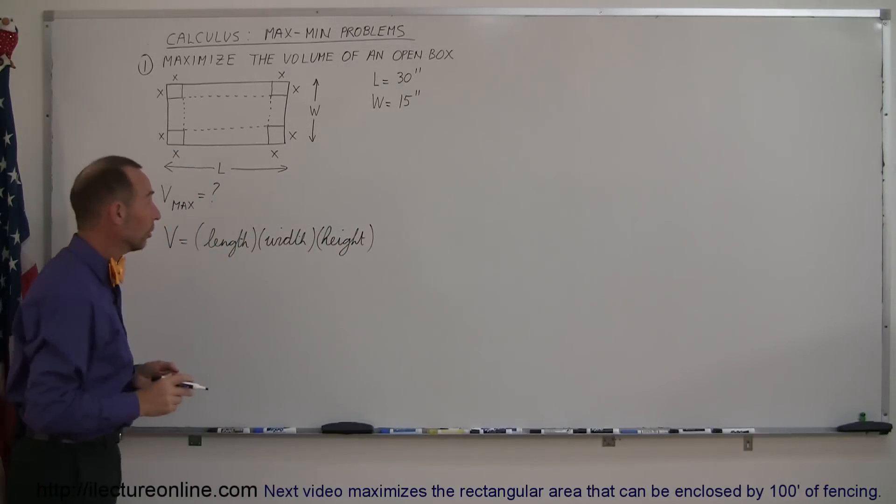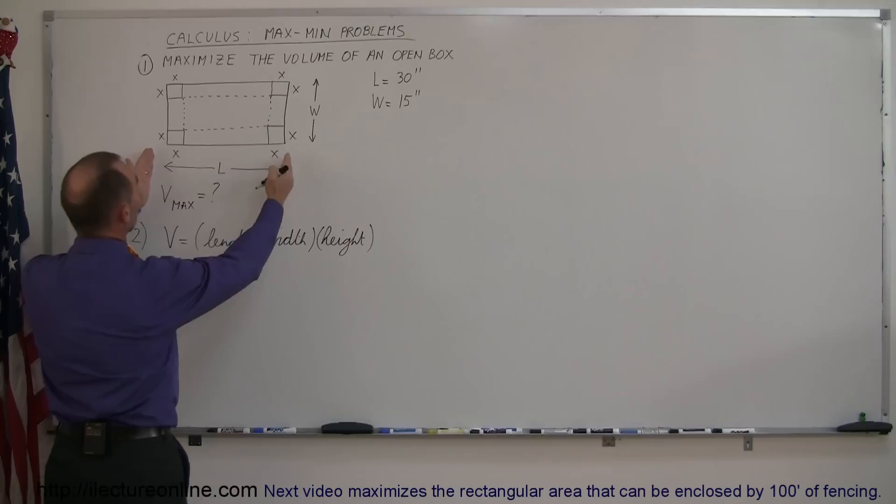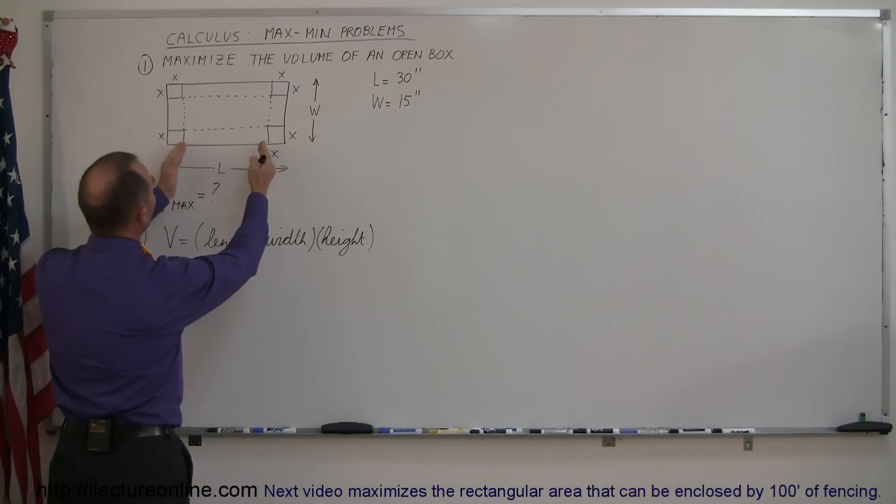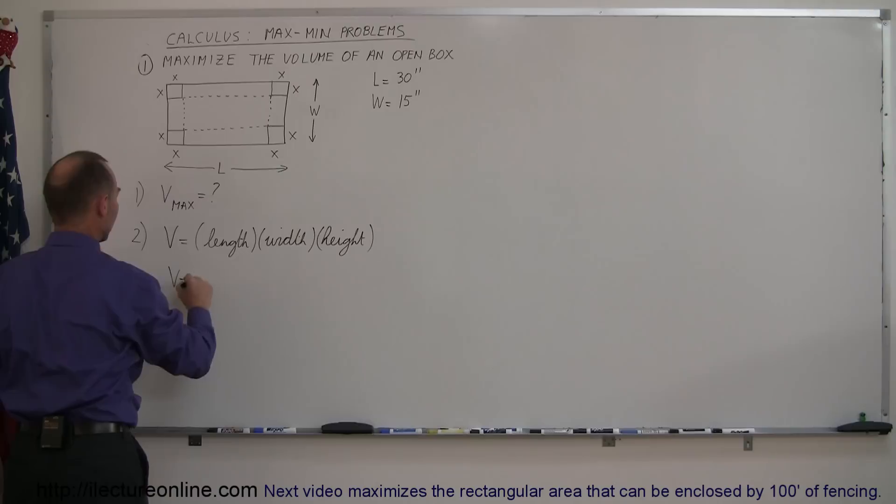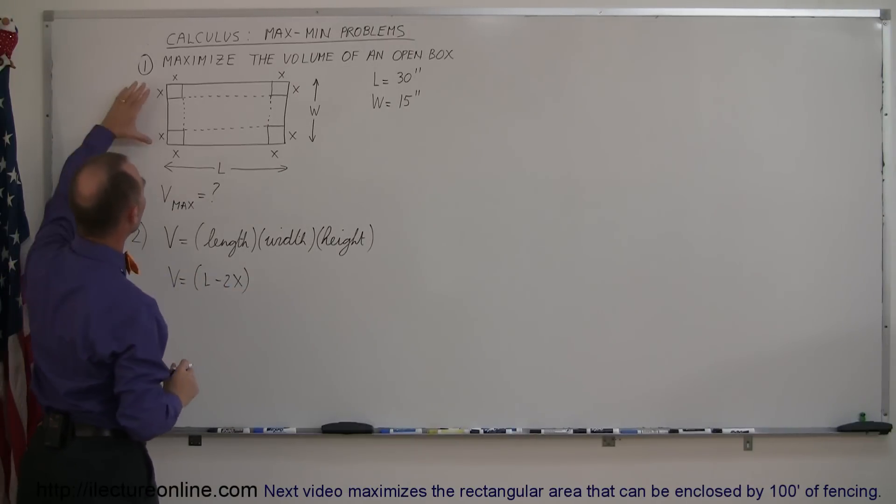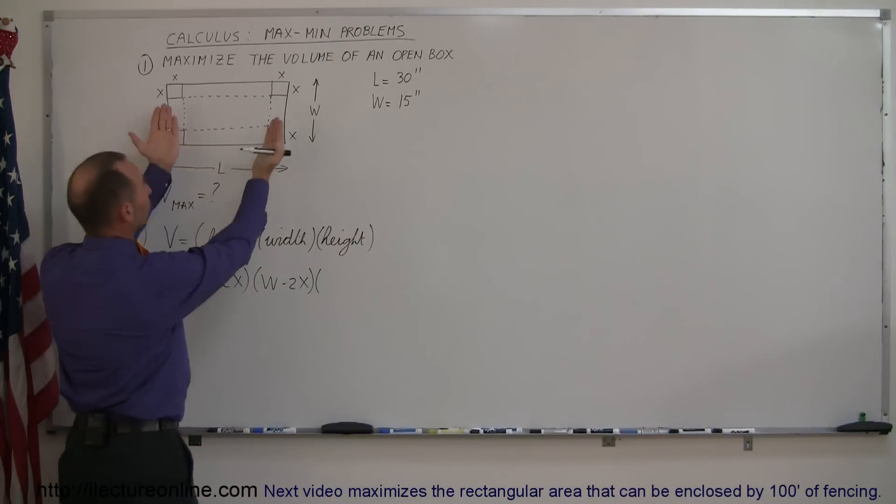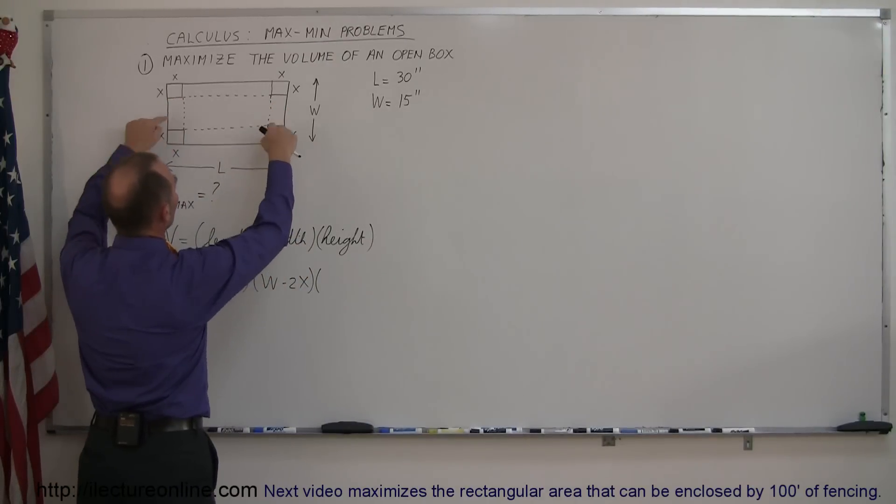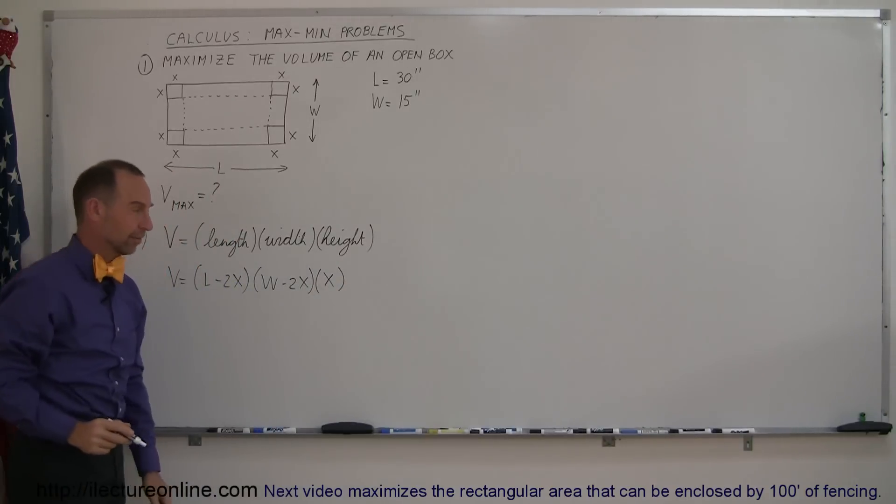Now we have to determine what the length, the width, and the height is. The length of the cardboard is l, but the length of the box will be l minus 2x when the cutouts are cut out. So we have v equals length minus 2x. The width of the box will be the width of the cardboard minus the 2x, that would be width minus 2x. And then the height will be, once we cut the corners out and we fold up the ends, then the height would be equal to the size of the cutout x.